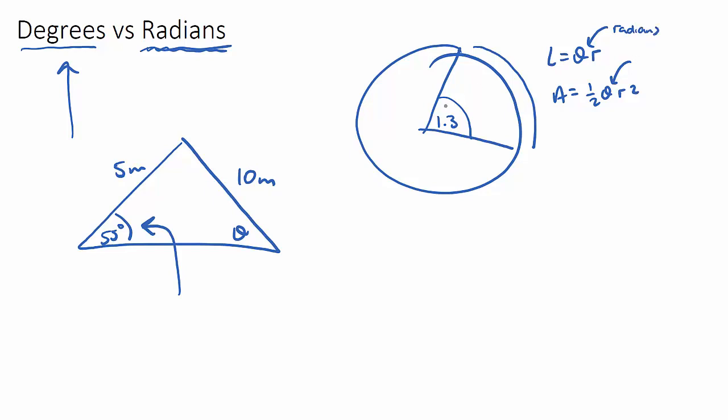If you put degrees theta in there, you're going to get massive answers for the length of an arc and area, and it's actually not correct. So they need to be in radians.